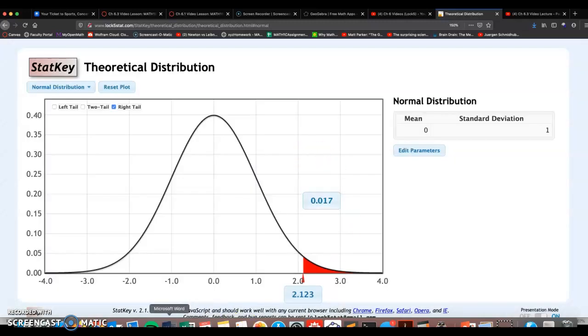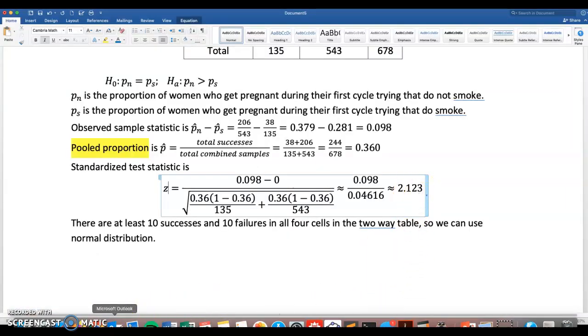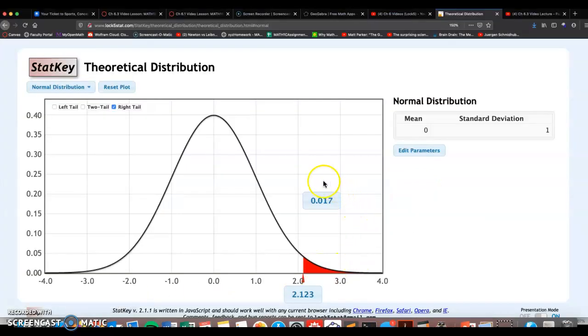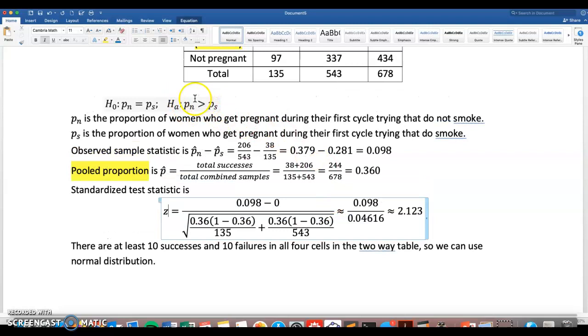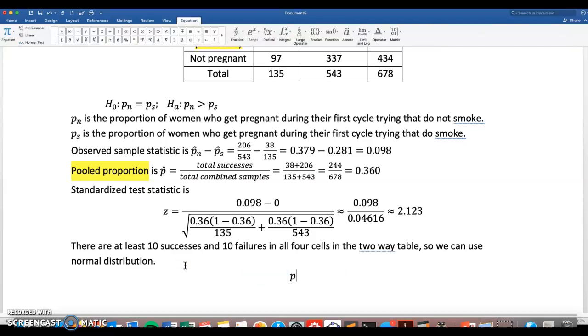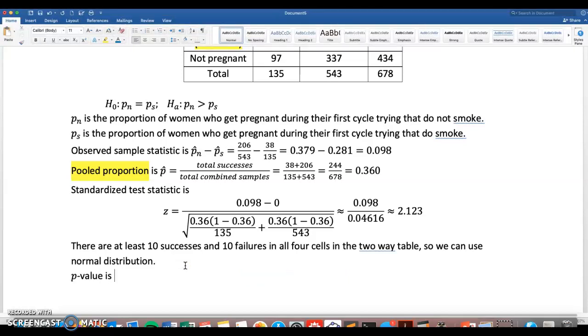Now I'm down to 2.123. All right, so our p-value here is 0.017. We're going to the alternative hypothesis is greater than, so we are not going to double it. We get the p-value at 0.017.